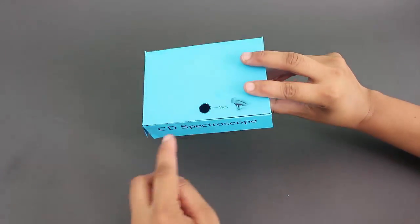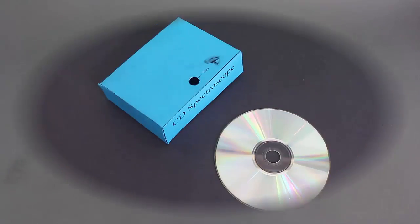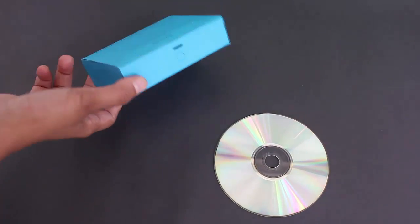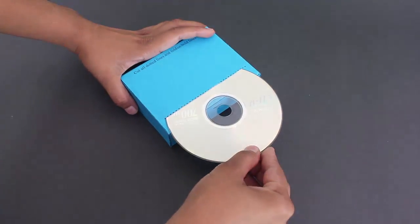This is for viewing. This rectangular slit is for the light to come in and then you take a CD and insert the old CD into the long slit.